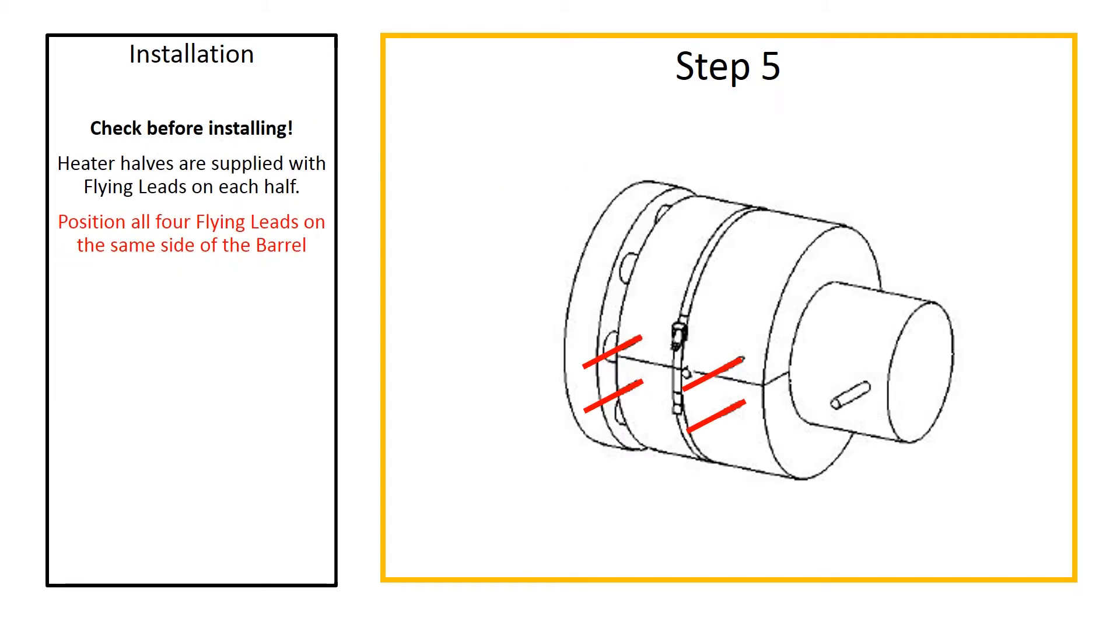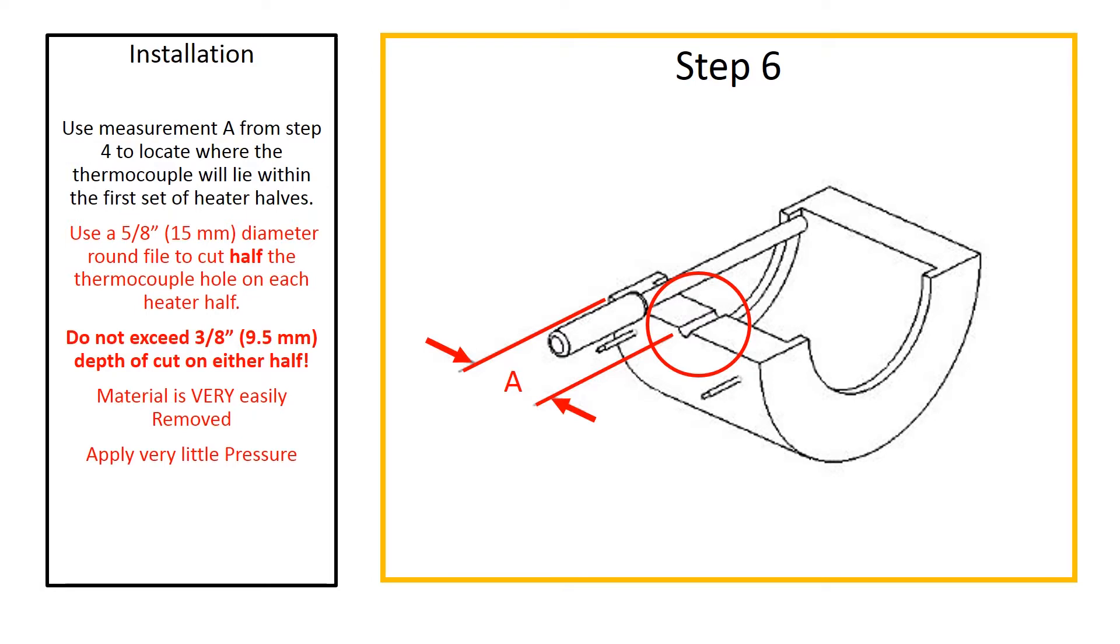Prior to cutting the thermocouple penetrations be sure to position all four flying leads of the two TCS halves on the same side of the barrel. Then mark the location for the thermocouple on the TCS section and slowly grind a half circle into the edge of the part using the 15 millimeter tool. Do not exceed 9.5 millimeters depth. The material will grind away very quickly. Take extreme care not to put excess pressure on the tool or part.